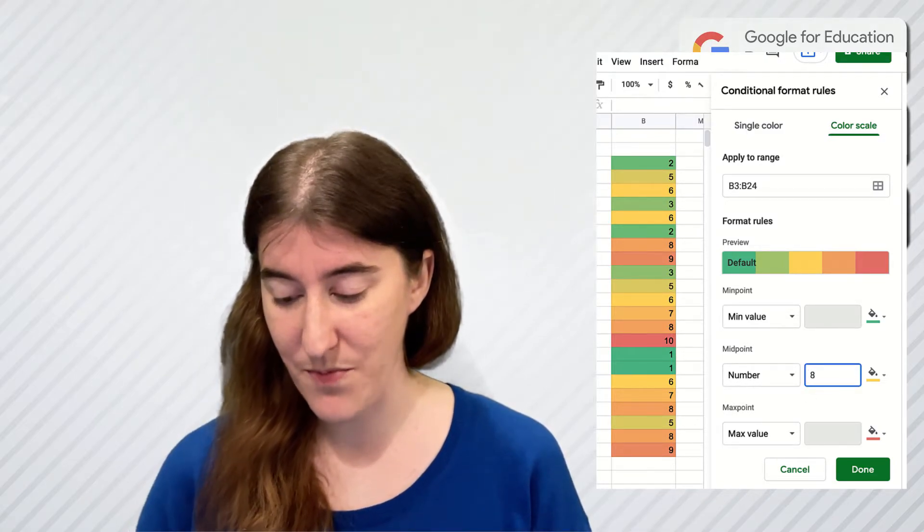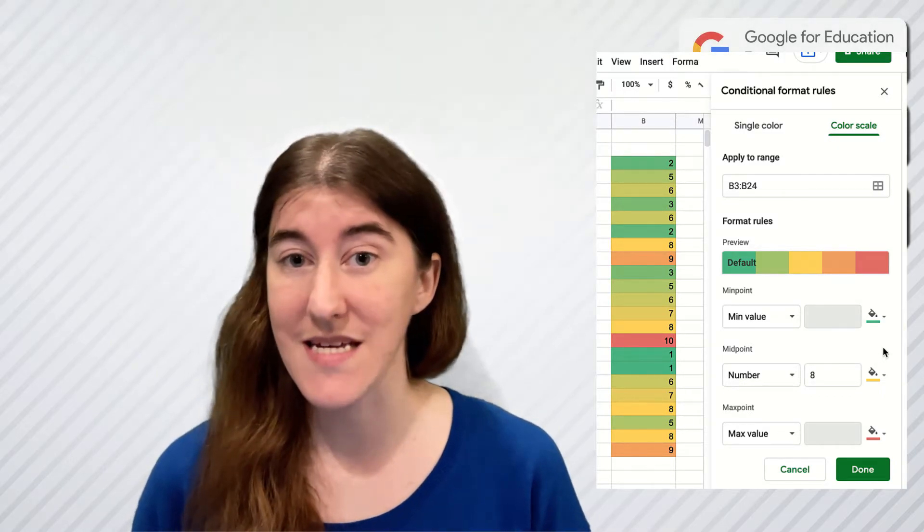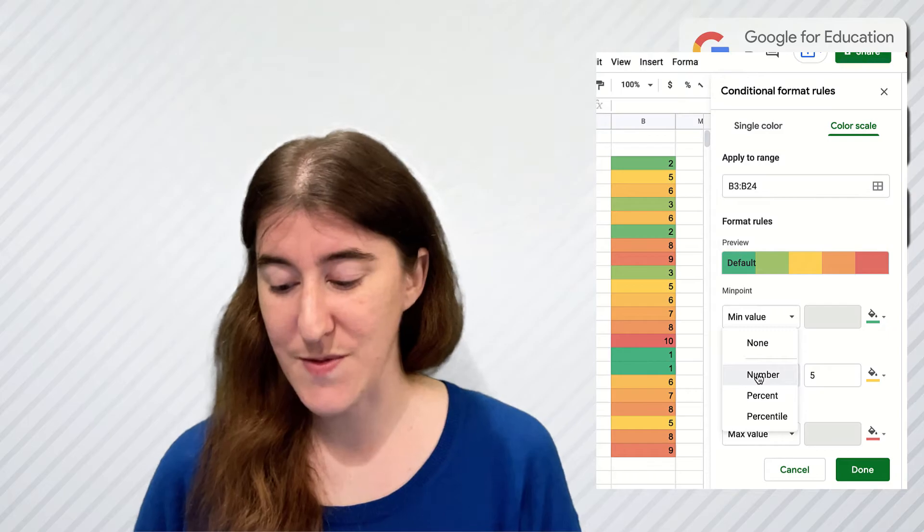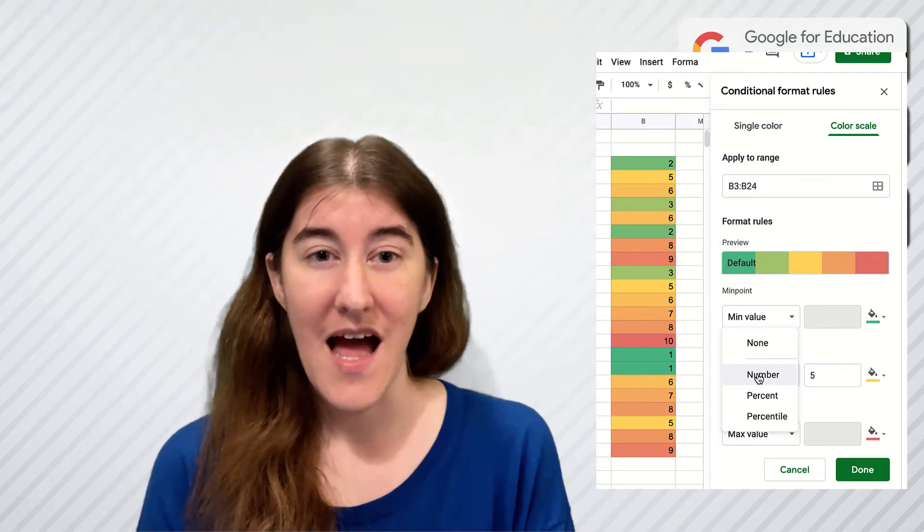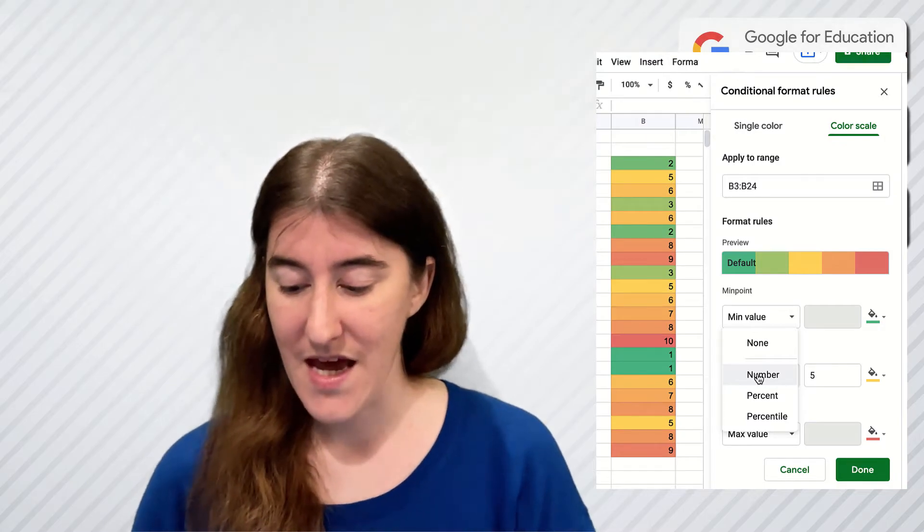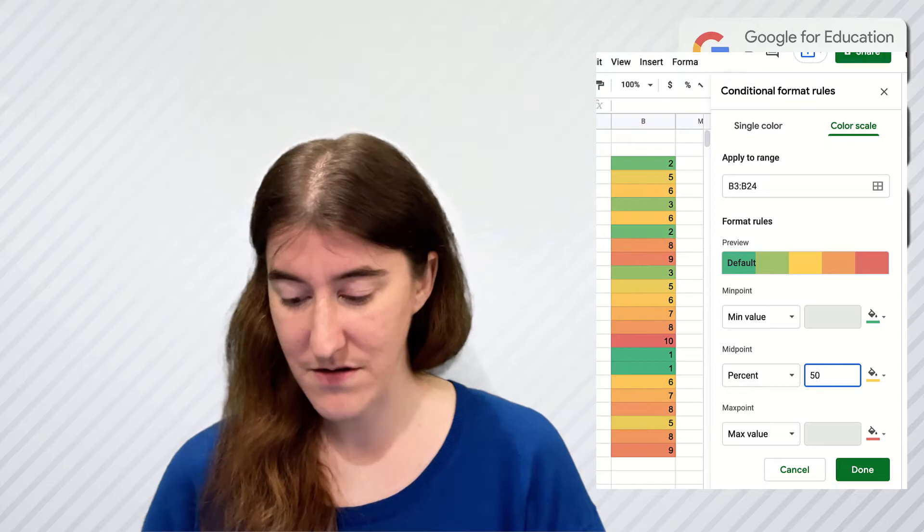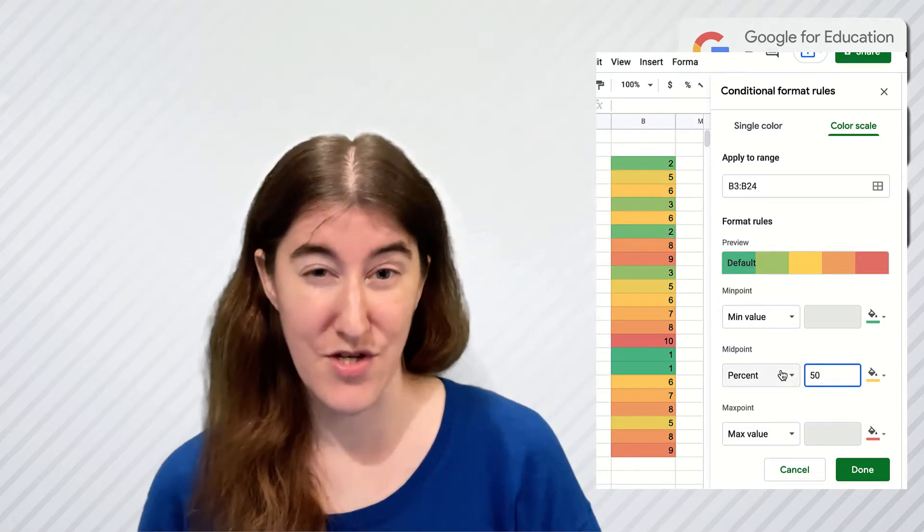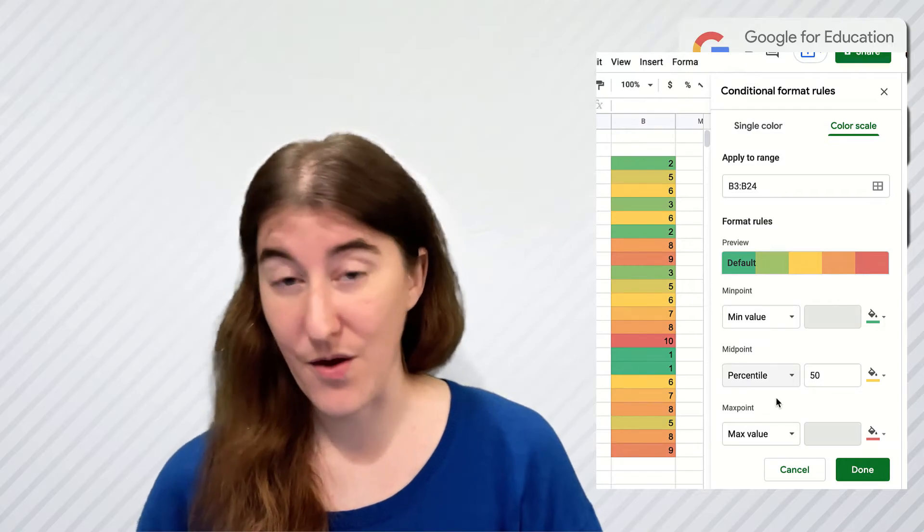So I can adjust this midpoint to be whatever I want it to be to showcase the data, and again I can choose between a specific number, a percent, or a percentile as a way to view. And even if I change it to percent and percentiles, so 50 percent matches that five, but 50th percentile we're going to have a different color scale so I can see it in different ways.